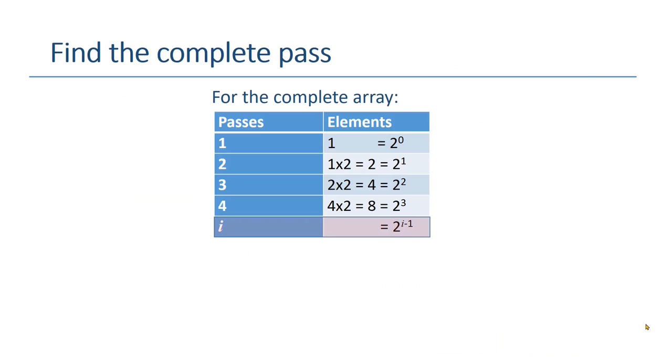After finding the complete pass, we only need to establish the relationship between number of items versus total pass. If we sum up all these numbers, we will get total number of items, which is n. This is our geometric progression. The summation of these numbers will give us 2 raised to the power of i minus 1. To solve this, we can have log base 2 in both sides, and then i is log n plus 1 base 2. For n elements, the maximum number of passes would be log n plus 1 base 2.